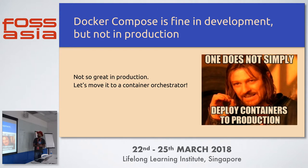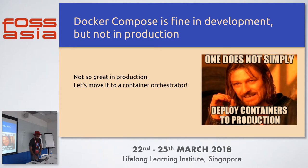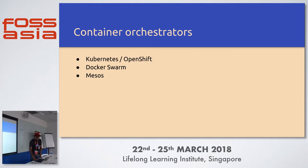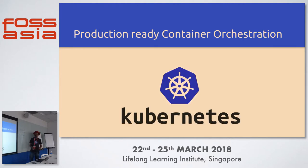But not for so long, because one does not simply deploy containers to production. You need some kind of container orchestration, some kind of management. Docker Compose is good for local development but not for production. So there are multiple container orchestrators — Kubernetes, Docker Swarm, Mesos — but since this is a Kubernetes talk, I'll talk about the production-ready container orchestrator Kubernetes.